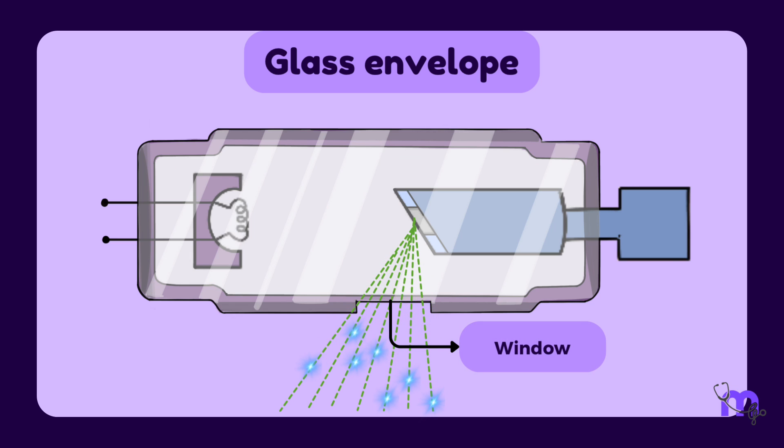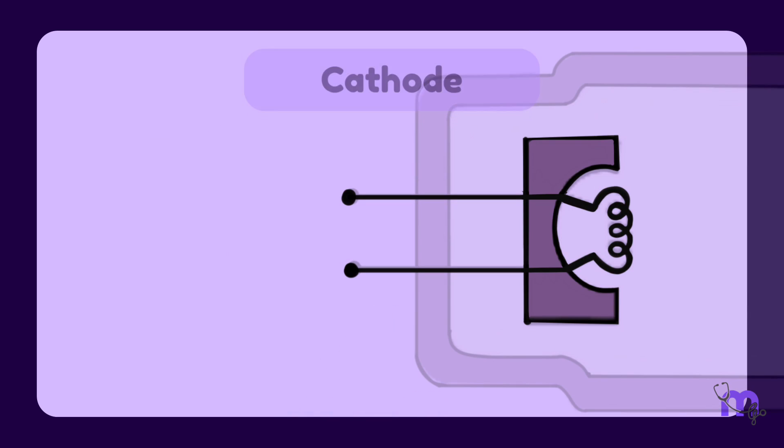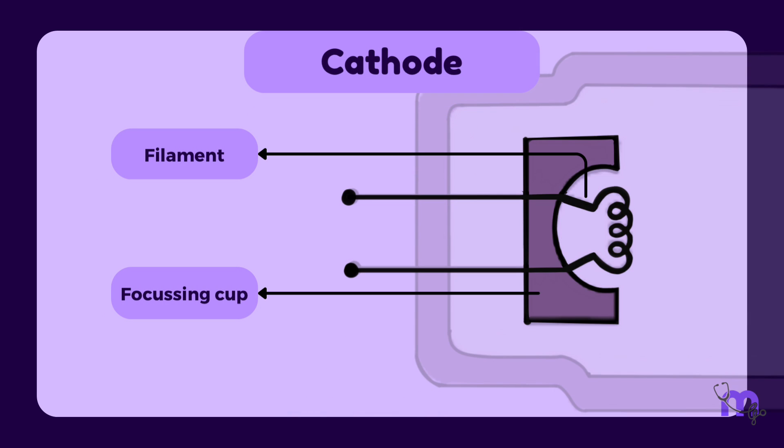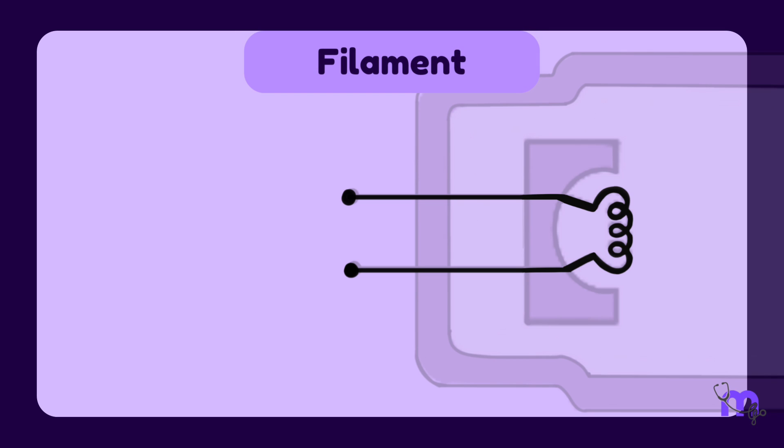The cathode consists of a filament and a focusing cup. The filament is made of tungsten and is supported by two stiff wires that allow current to flow into the filament, heating it up and releasing electrons.